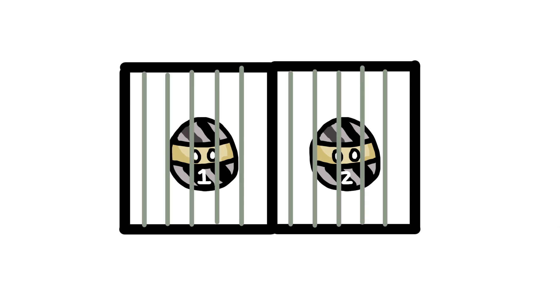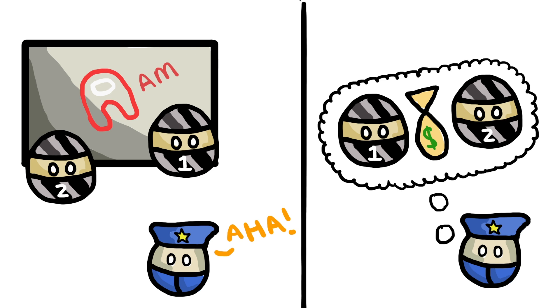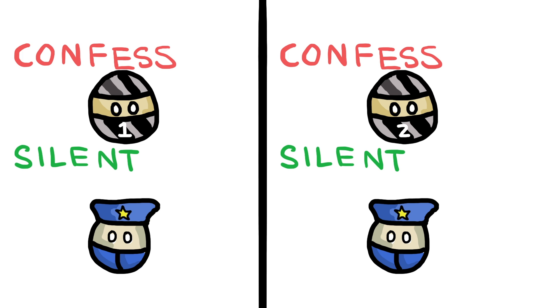Imagine that two criminals in a gang are arrested and isolated so that they can't communicate with each other. The police caught them for being involved in a minor crime, but they also have a strong suspicion that the same criminals participated in a very serious one on that same day. The caveat is that they don't have enough evidence to prove it. Instead, they concoct a simple plan. Each prisoner is given a choice, confess or stay silent.